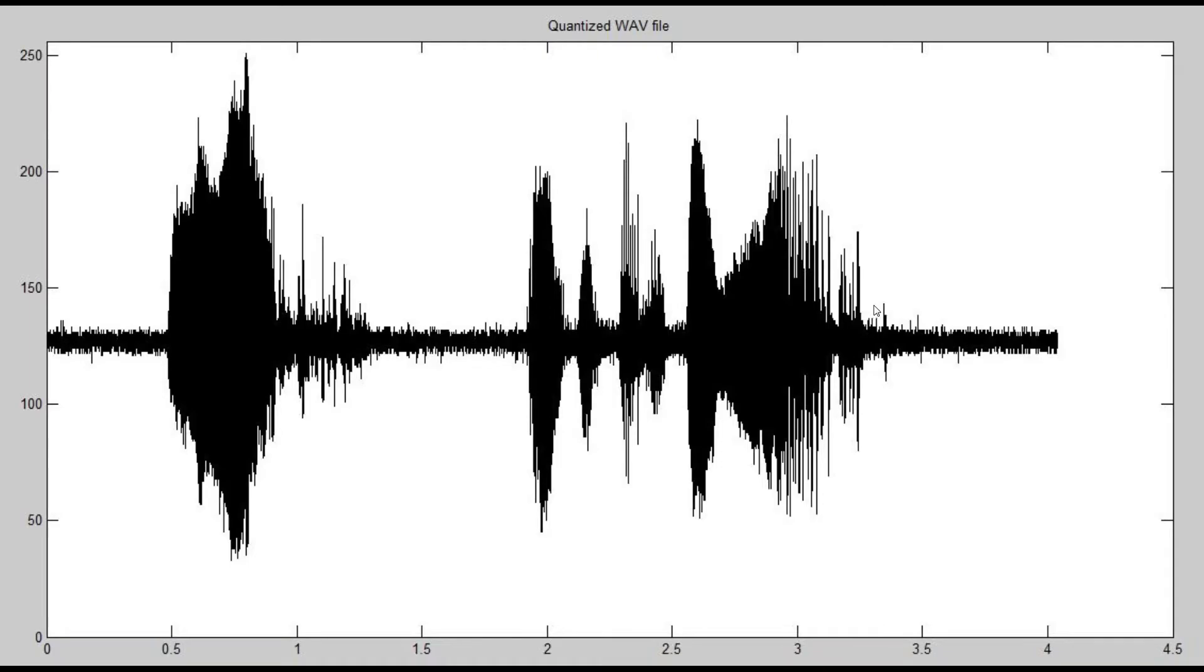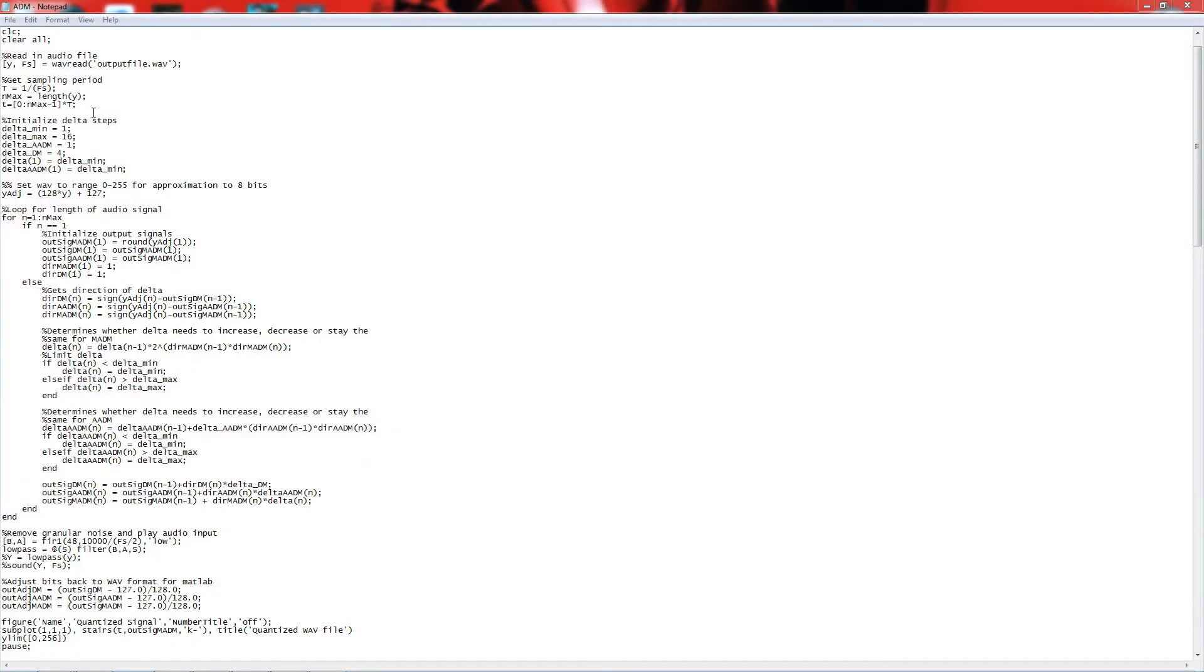And so here's my code for this. We have our WAV file input, which contains my voice, my beautiful voice here. And what we do is we actually shift this signal from a 1 to a minus 1 range, which is what we inputted, and we change it to a 0 to 255 to approximate it to an 8-bit place.